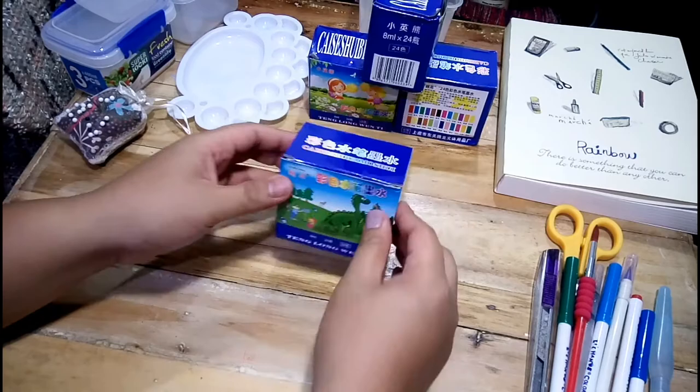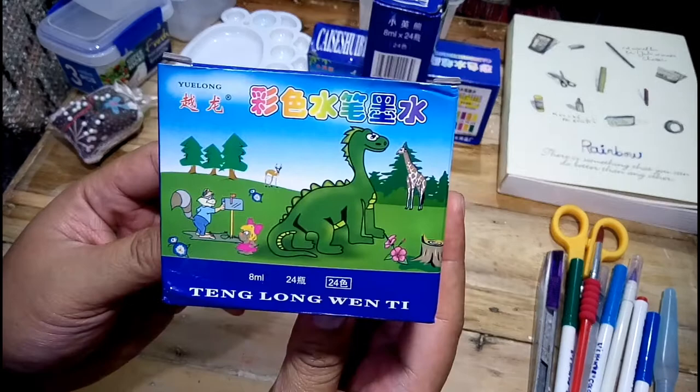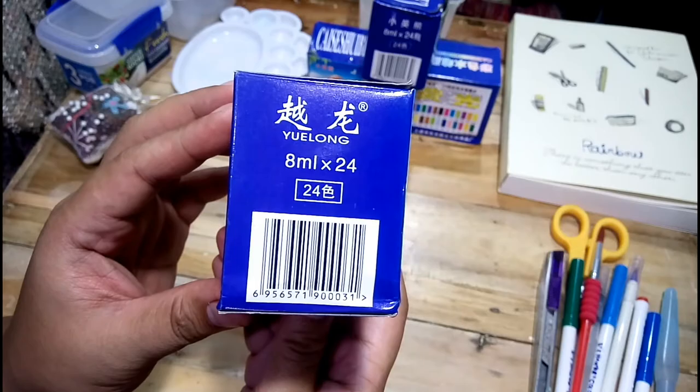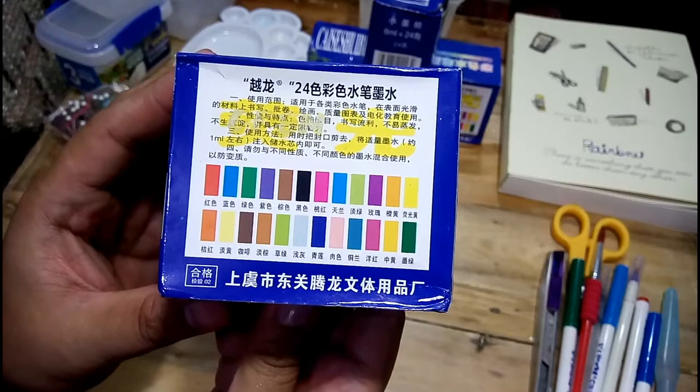Hey guys, welcome back to my channel. My name is Jimmy and this is my art life. So today I'll feature a generic China-made ink set that I bought from Shopee for just 80 pesos. One box has 24 colors and each color is 8 ml.